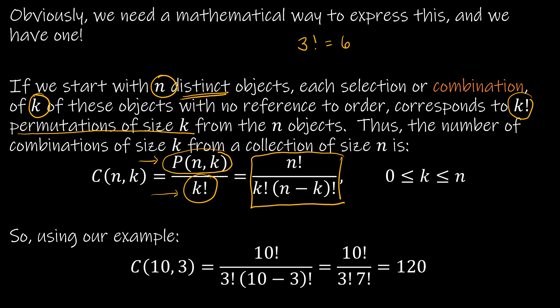So using our example again, we have 10 comma 3. So we have 10 factorial over 3 factorial and then 10 minus 3 factorial. So really this was the permutation, and then we're dividing by that 3 factorial as well, which was 120.